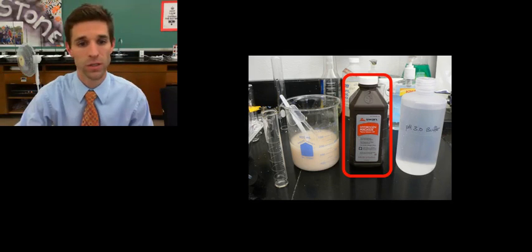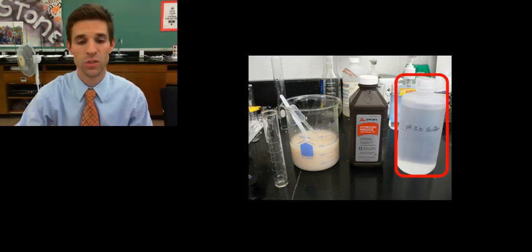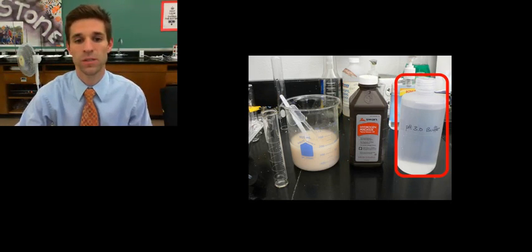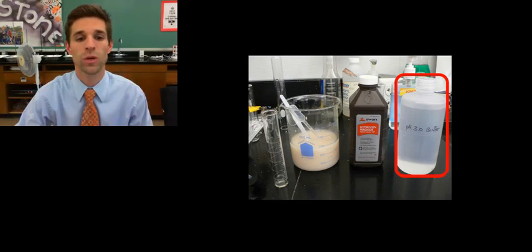And decompose it into the water and oxygen. And then our variable that we're going to be testing is pH. So our question is how does an environment with a different pH affect how the yeast cells and therefore their enzymes actually work to decompose and cause a chemical reaction with the hydrogen peroxide.